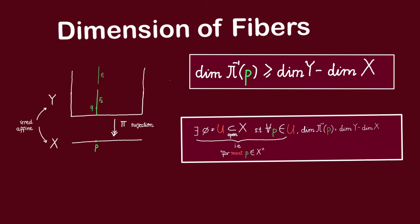In the previous video, we established that given a surjective morphism pi between irreducible varieties, we will always have that the dimension of every fiber is going to be greater than or equal to dimension of Y minus dimension of X. And we claim that equality happens for the fibers over most points P in X — that is, equality happens over a non-empty open subset of X.